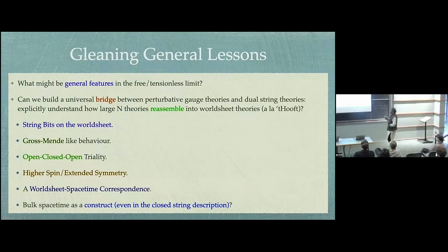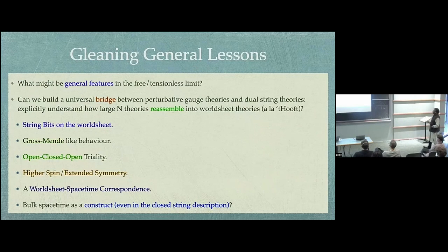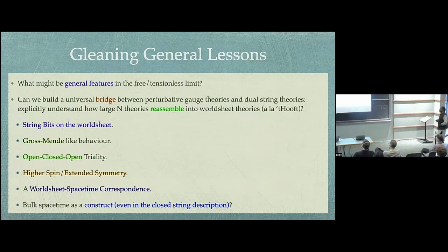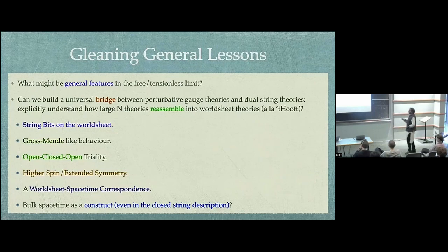The broader question is: what might be the general features of the free tensionless limit, and how do we extract these features as a way to build a bridge between perturbative gauge theories and dual worldsheet string theories? In some ways, to understand very explicitly how large N theories can reassemble themselves into worldsheet theories — which was the original intuition of 't Hooft.